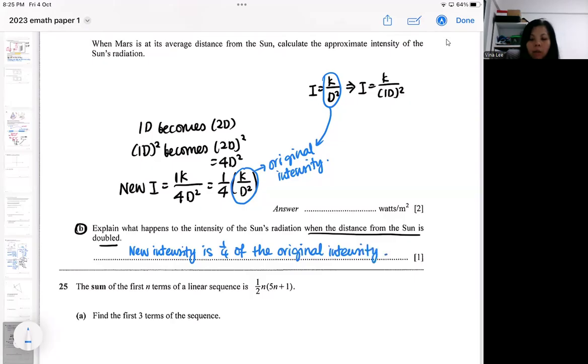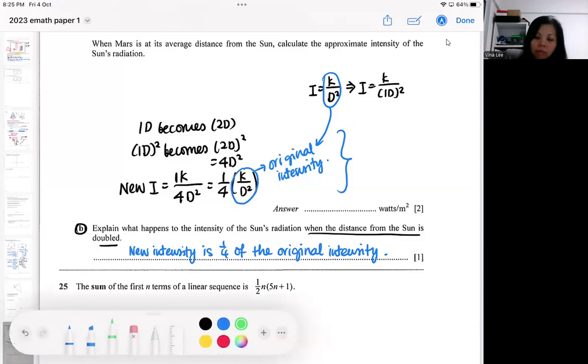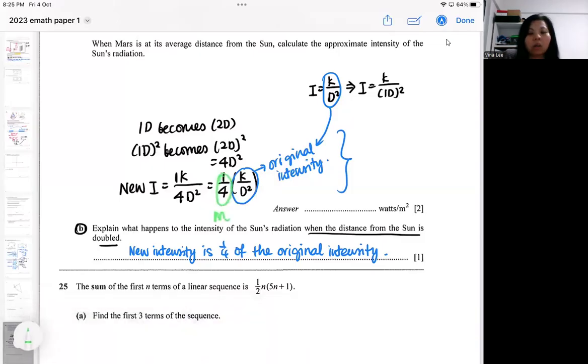So sometimes they will rephrase it. The intensity of the sun radiation changed by a factor m when the distance is doubled. So if they have asked you for like the intensity changed by a factor m, then m is just one quarter. That means it's one quarter of the original.